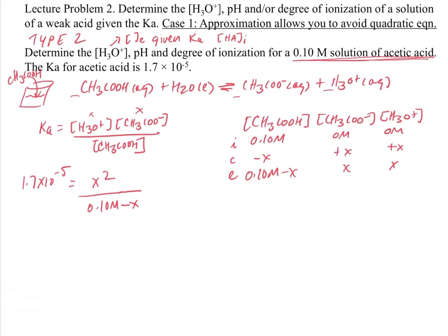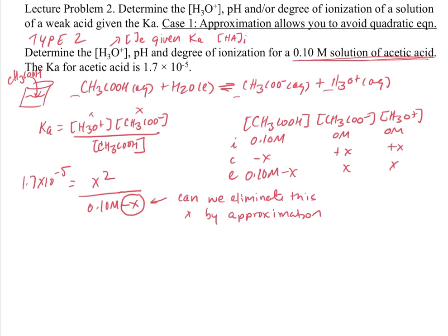However, this is something really important we're going to use quite a bit. The idea is that we can potentially eliminate the X in the denominator by approximation. You might think that would give the wrong answer — and technically it introduces a slight error. But what we'll discover is that the error is so small it falls within our significant figures and is undetectable.